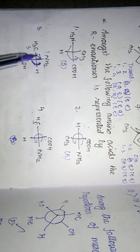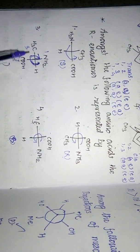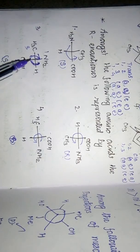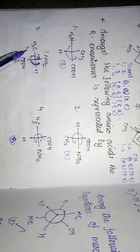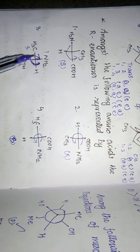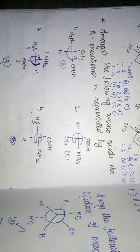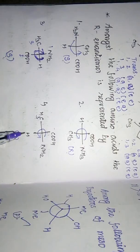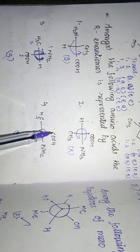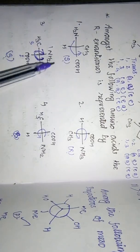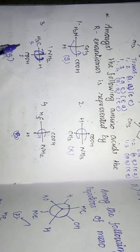In option 3, the least priority group (methyl) is on the horizontal position and priorities go clockwise, which would give the S form. In option 4, the least priority group is on the vertical position and the direction is anticlockwise, giving the S form. The second option shows the R form, and the identified R enantiomer is confirmed from the priority analysis.